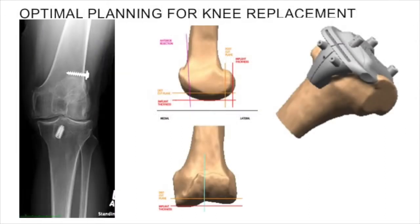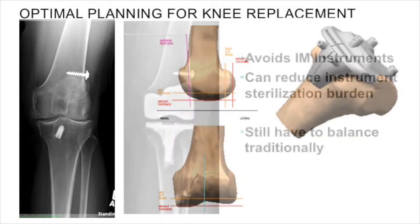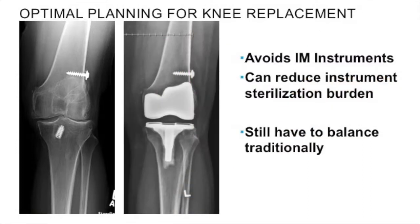For outpatient surgery, this is quite simple. The whole team knows what implants you're going to use, and you know the anatomical issues in advance, so you can minimize sterilization issues and go straight toward your operative goal. The main advantage is that you can avoid intramedullary instruments and decrease bleeding in the knee and the risk of fat embolism. Of course, you do have to do traditional balancing with this kind of technology.